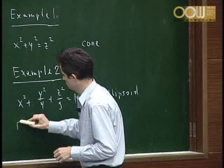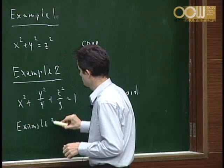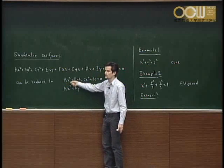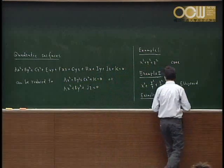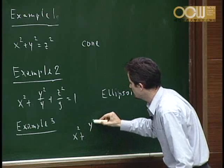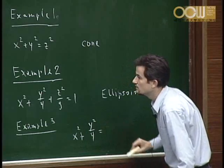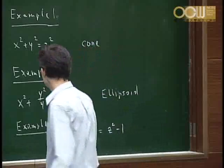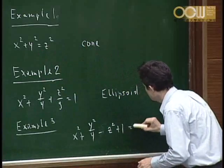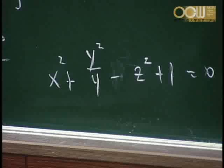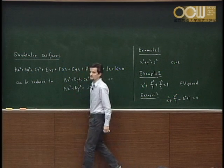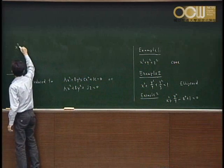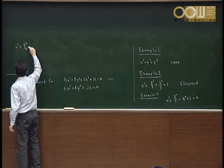The next situation is where only one of the coefficients is negative — for instance, c is negative and all others positive. So you might have something like x squared plus y squared over 4 equals z squared minus 1. You only get solutions if the absolute value of z is greater than or equal to 1.